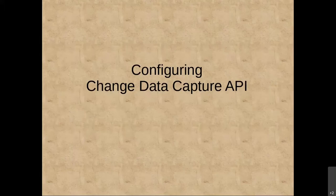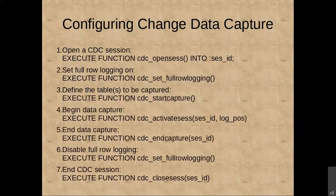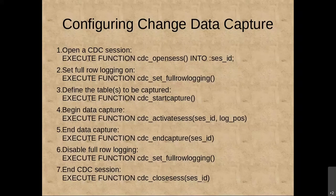Let's start with how you configure Change Data Capture using the API — it's rather straightforward in SQL, done in DB access or a C or Java program. You execute the function CDC_open_CES to open a CDC session, which returns a session ID needed for most subsequent calls. The second call is CDC_set_full_row_logging, which ensures you get a full copy of the row for an update — both the pre-image and post-image. If you don't set full row logging, you'll only get the changed columns.